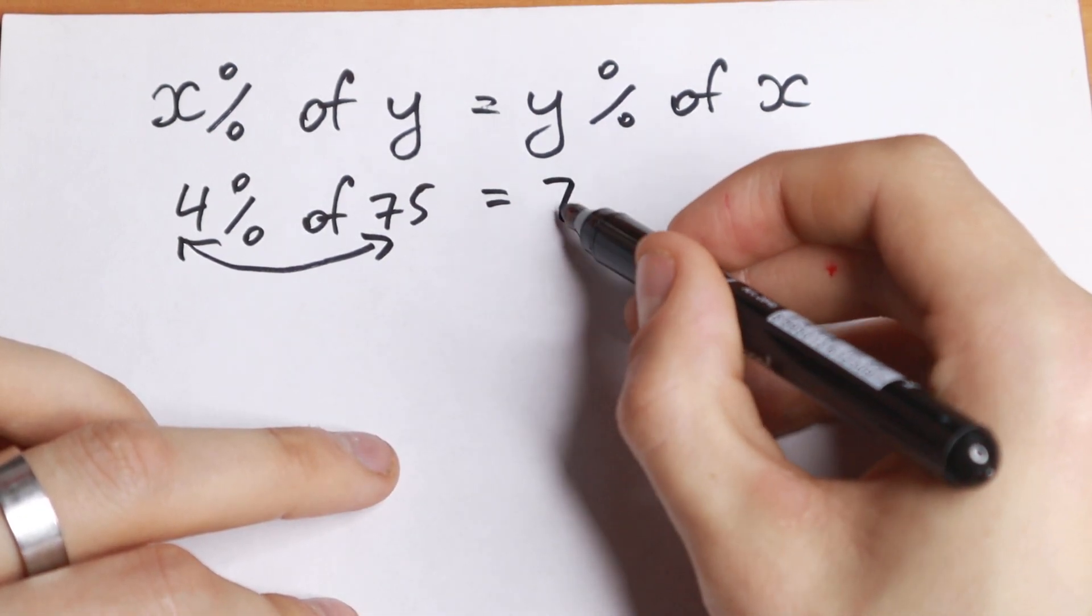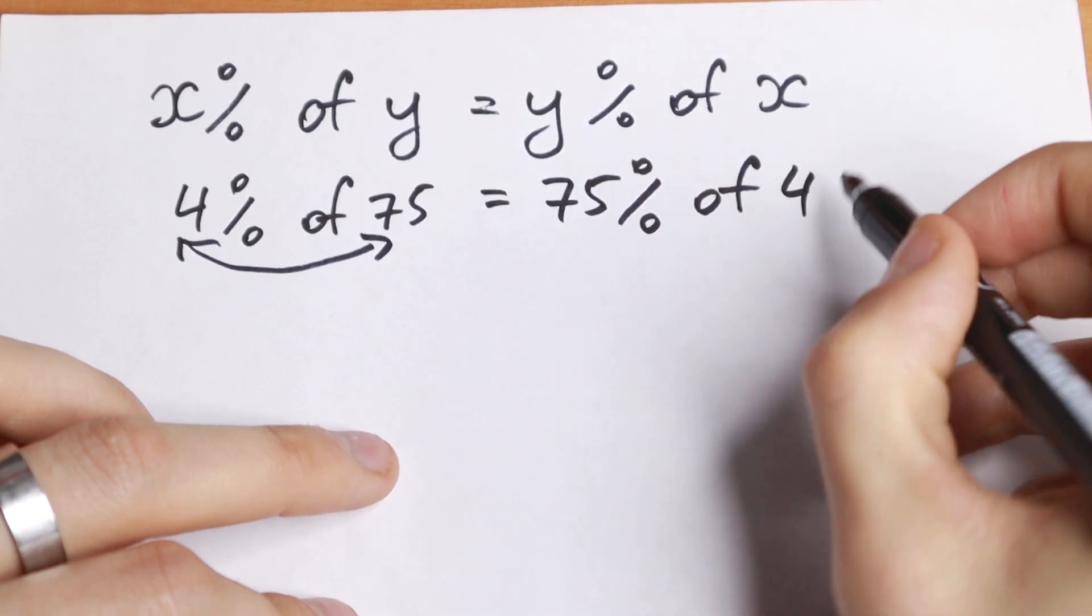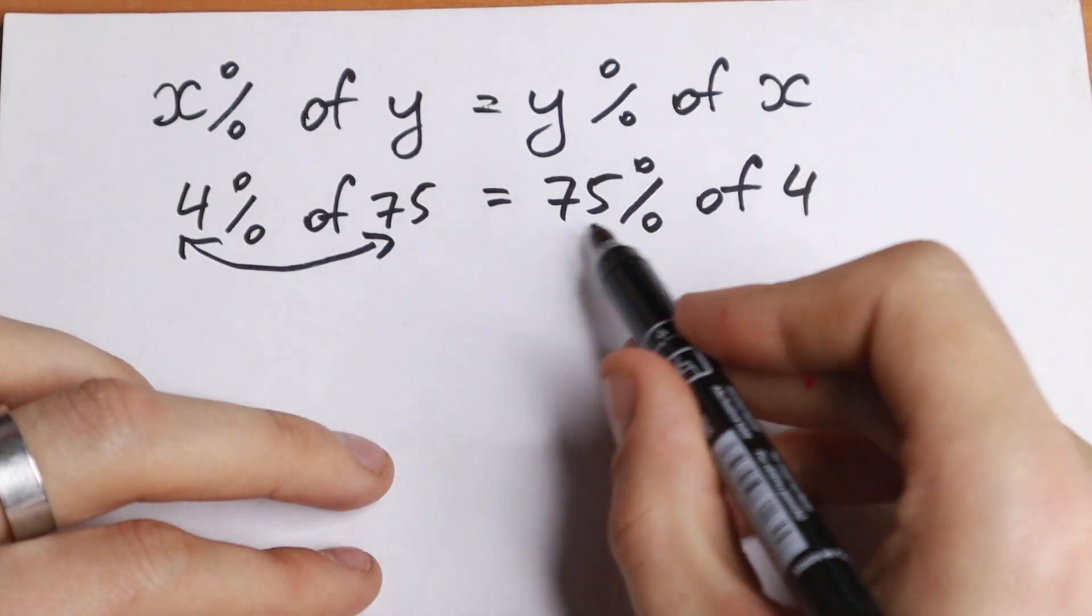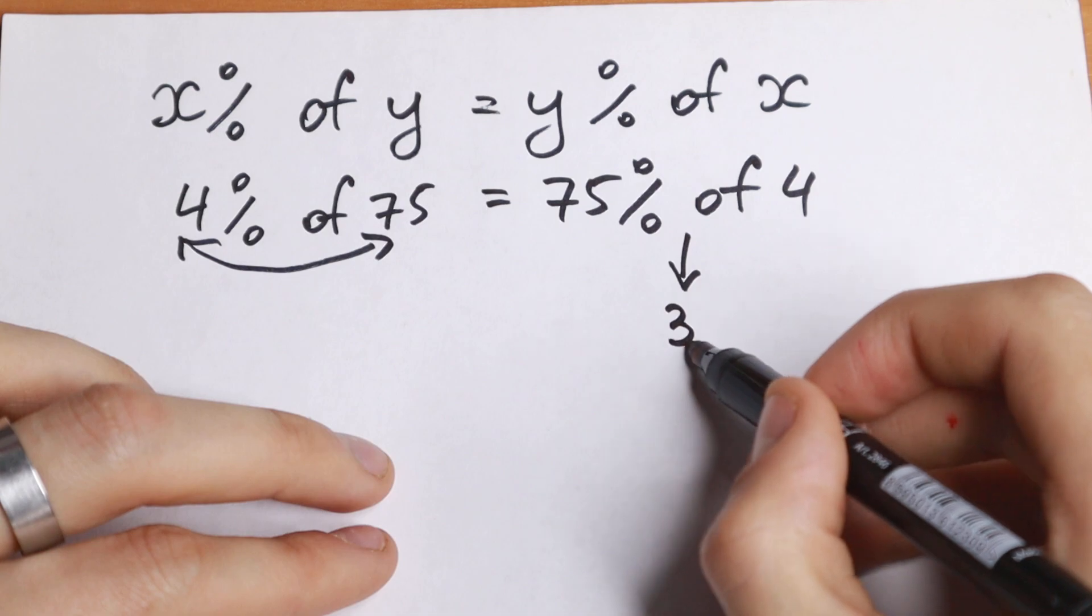this is a better way because we will have 75 percent of 4. And we all know this answer because right here we need just to find 75% of 4, and this will be equal to 3.